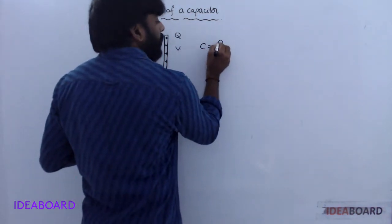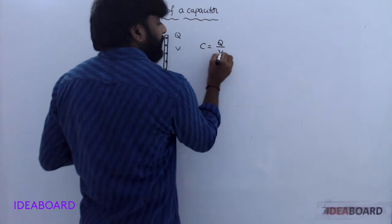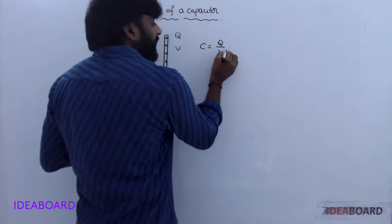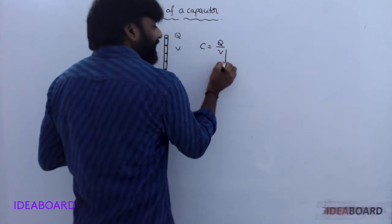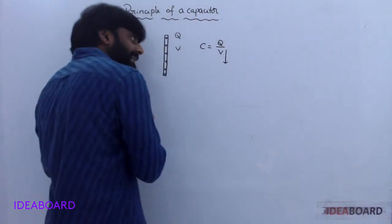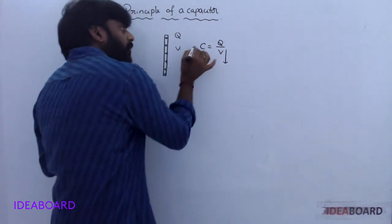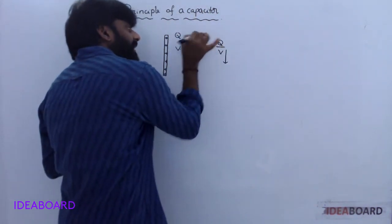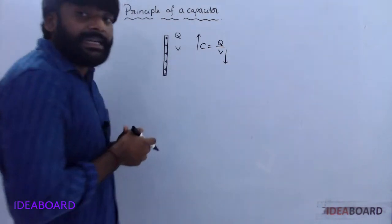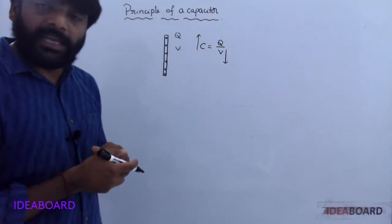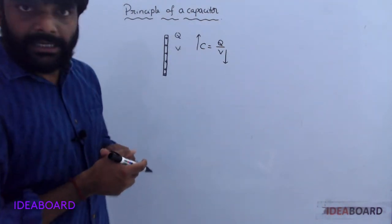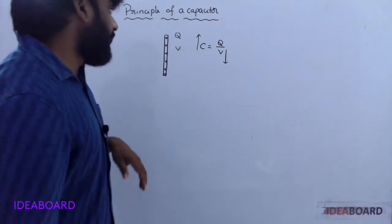C is equal to Q by V. If the potential is decreased, what happens to its capacitance? It increases. So if potential decreases, capacitance is increased.